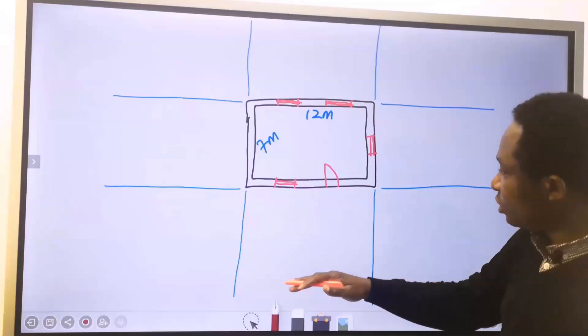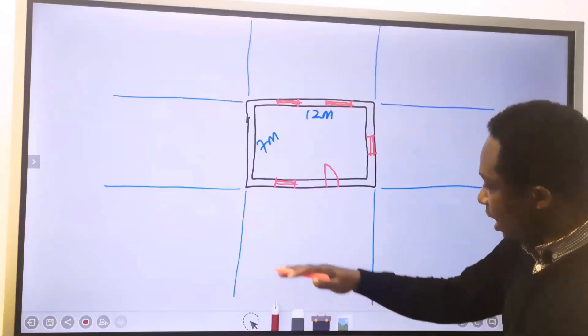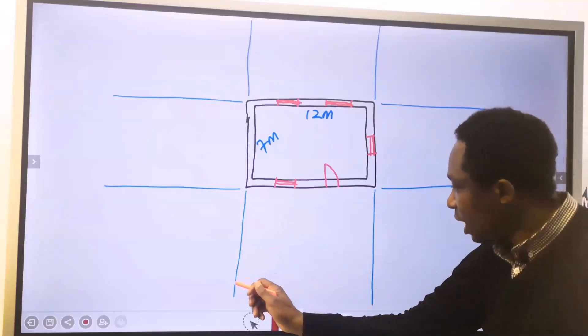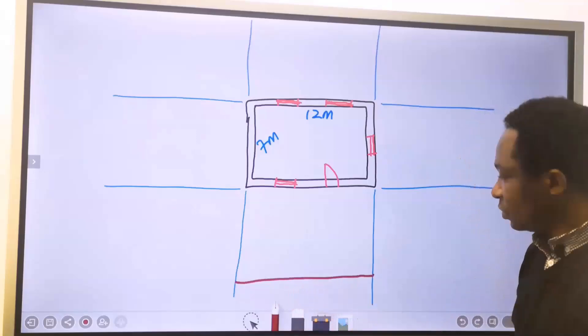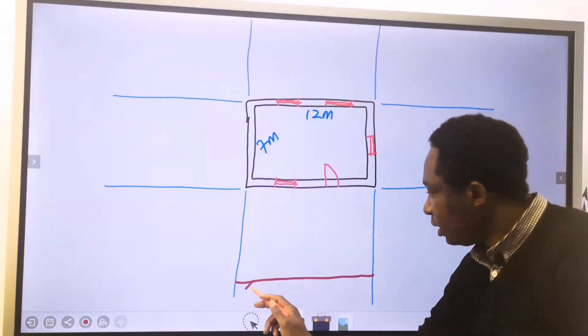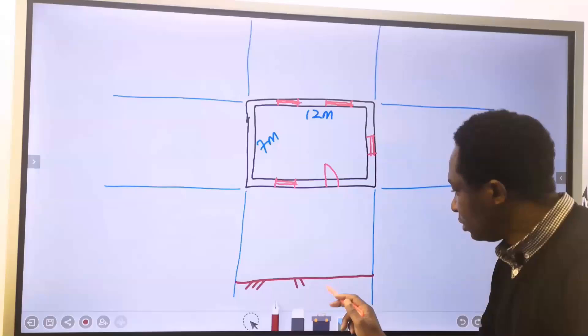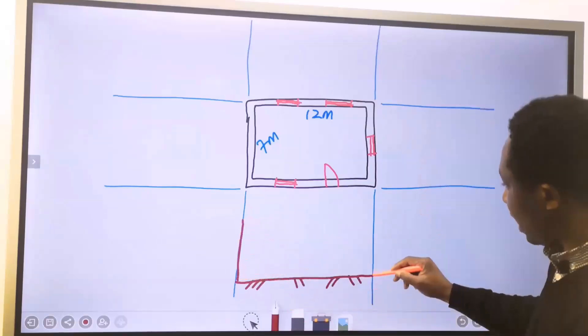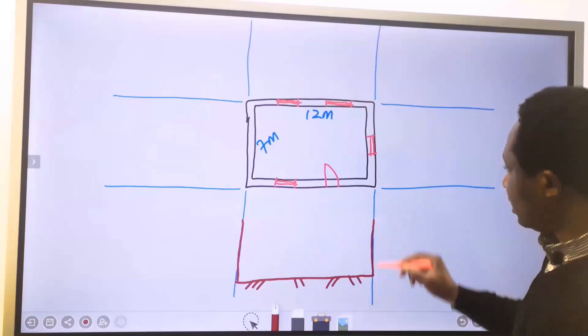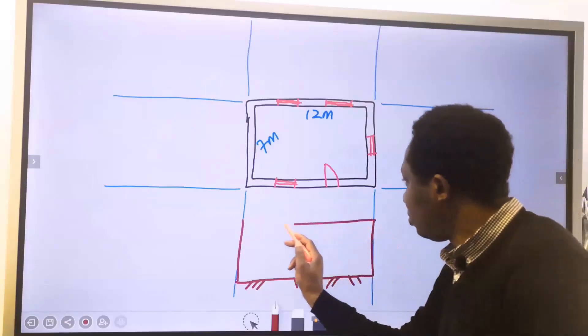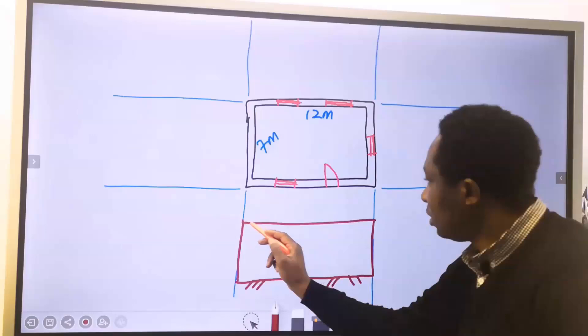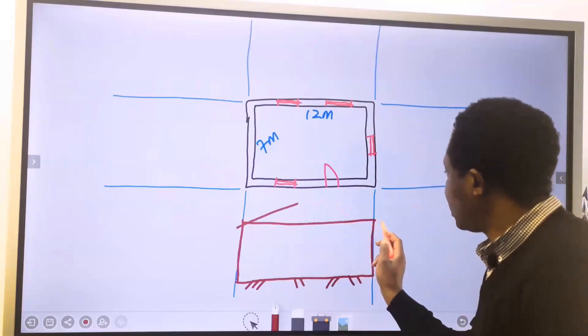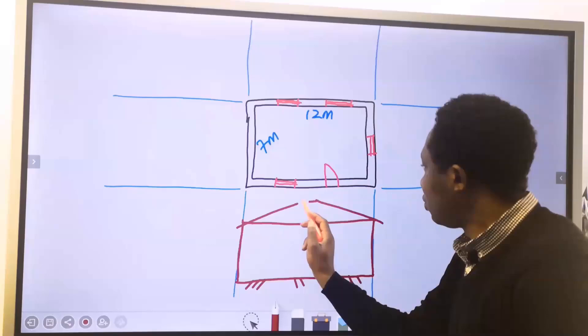Next, for the front elevation, I will come down a bit and draw a line. This will be for the ground. Next, I will go up like this. Then I will go up like this. This will be for the building.